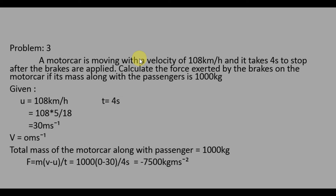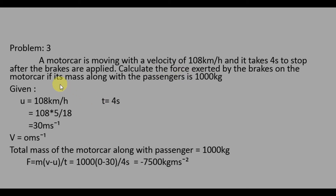The third problem is: a motor car is moving with a velocity of 108 km/h, and it takes 4 seconds to stop after the brakes are applied. Calculate the force exerted by the brakes on the motor car if its mass along with the passengers is 1000 kg. The motor car is moving at 108 km/h, brakes are applied for 4 seconds, and the car stops. We need to calculate the braking force with total mass 1000 kg.